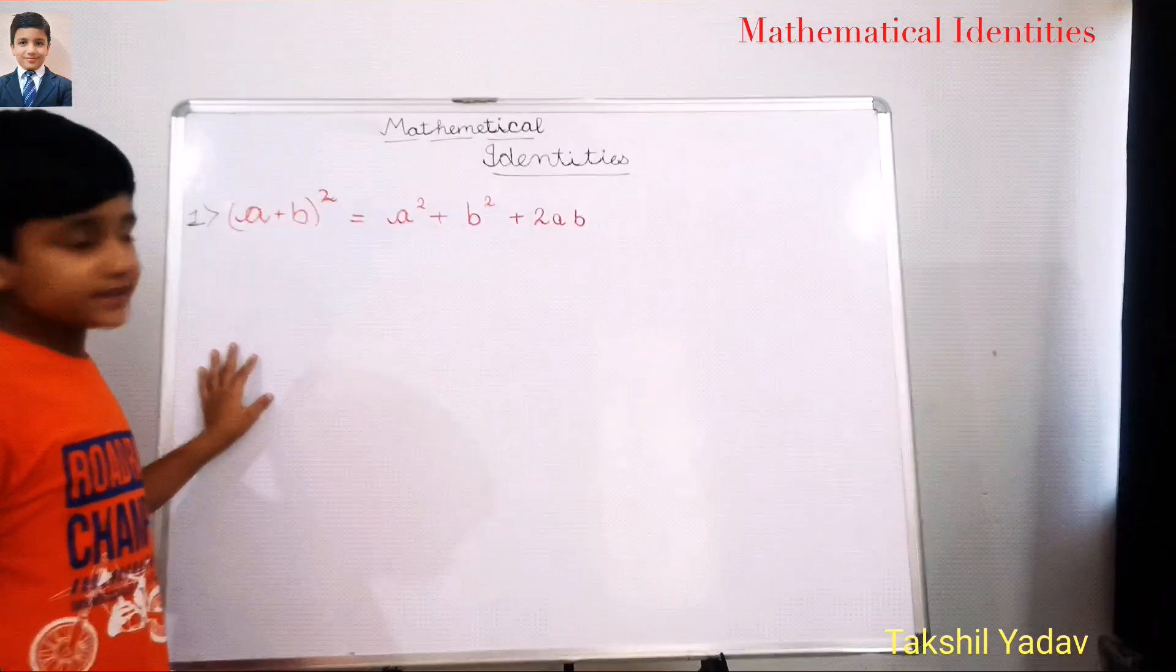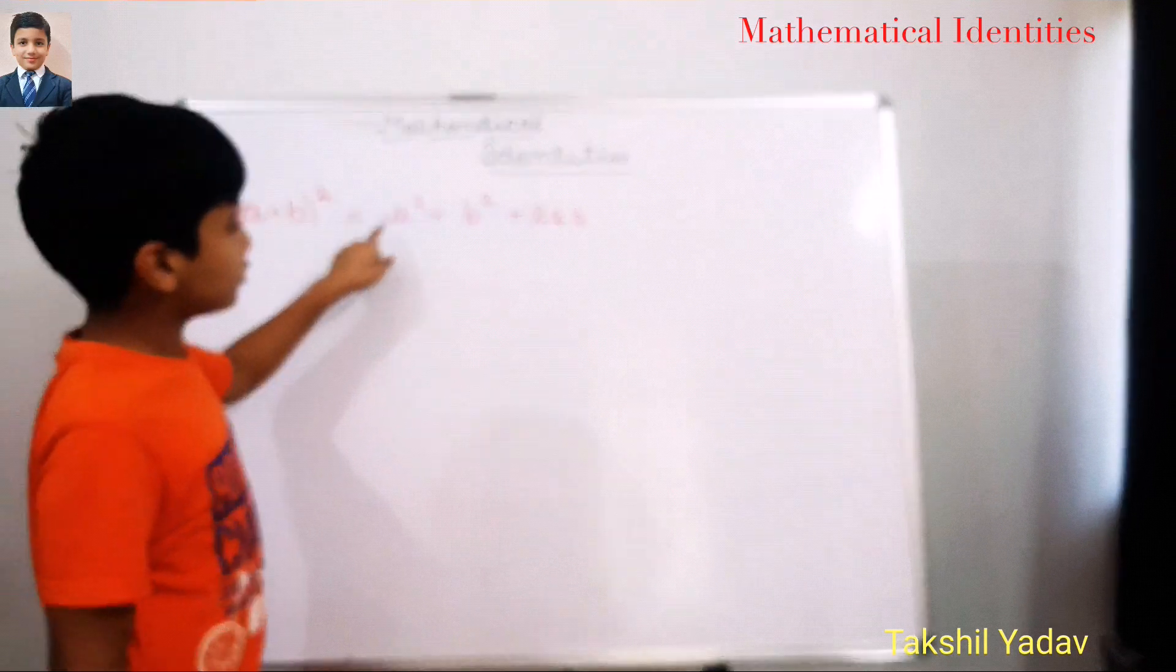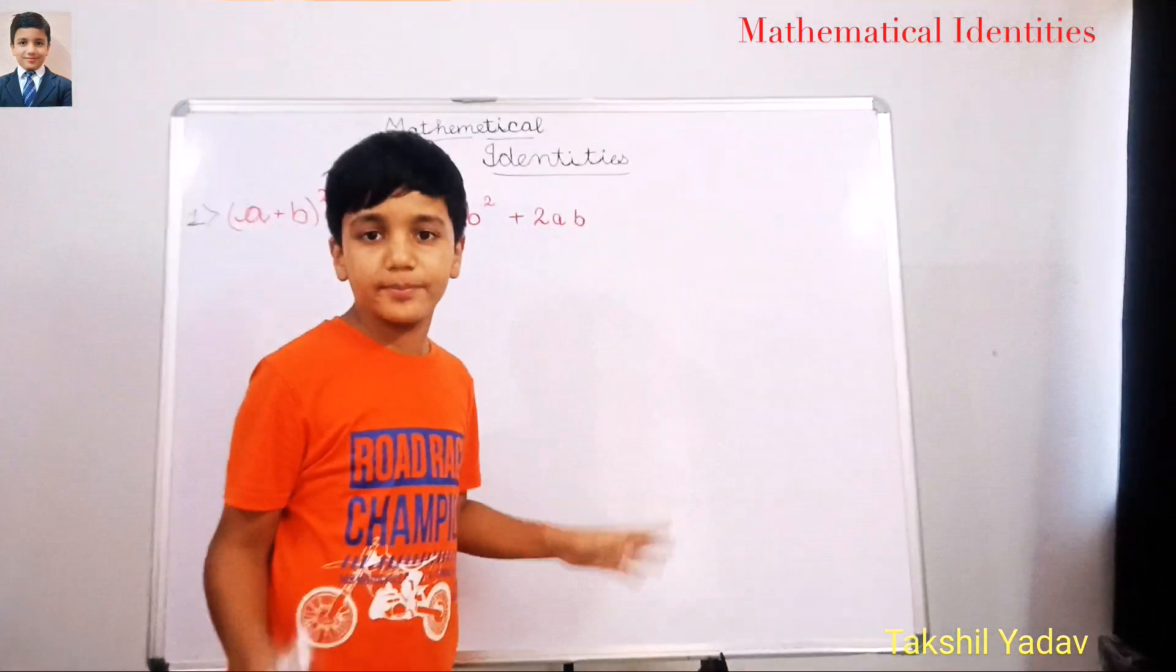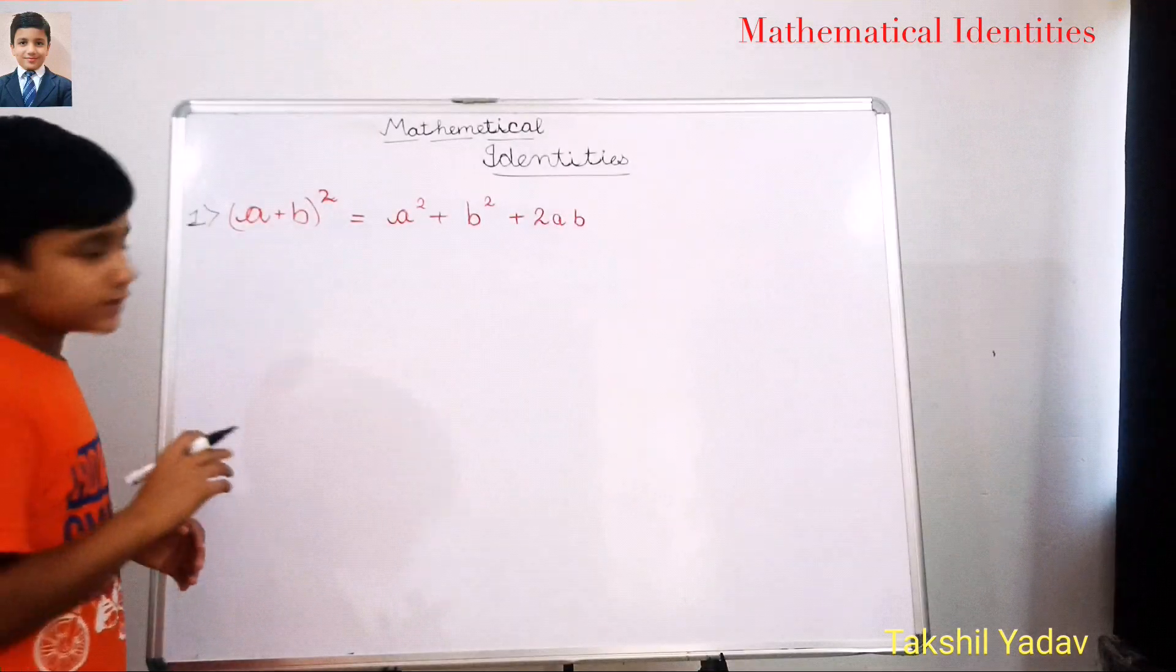Our first identity is a plus b whole square is equal to a square plus b square plus 2ab. Okay, so let's check it first.